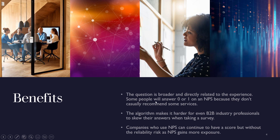These are the words I chose, which ends up forming a seven-point scale. The benefits are that the question is broader and directly related to the experience. As you know, some people will answer zero or one on NPS because they don't casually recommend some services. Also, the algorithm makes it harder for B2B industry professionals to skew their answers when taking the survey, even if they know the algorithm behind it.